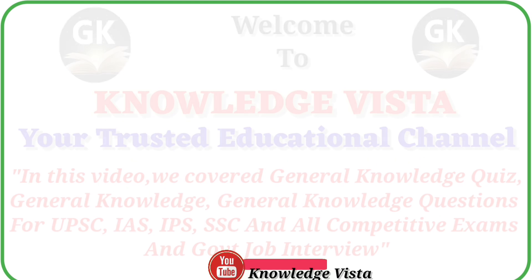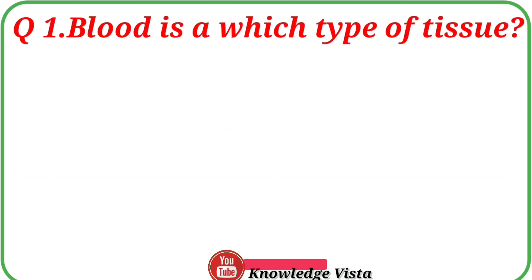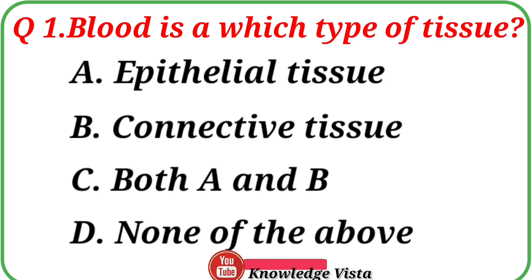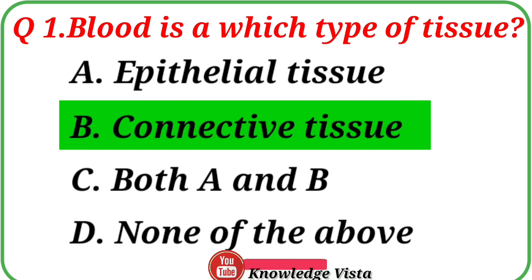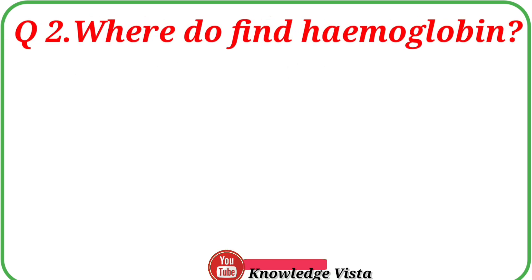Question number 1: Blood is which type of tissue? Option A: Epithelial Tissue. Option B: Connective Tissue. Option C: Both A and B. Option D: None of the above. The correct answer is option B, Connective Tissue. Blood is a type of connective tissue.